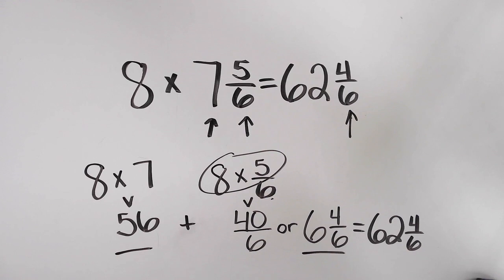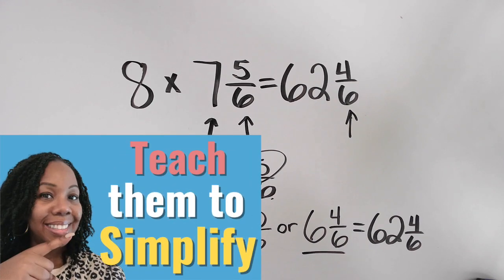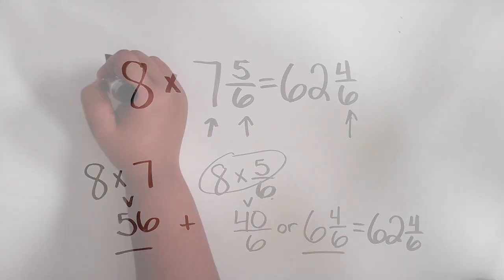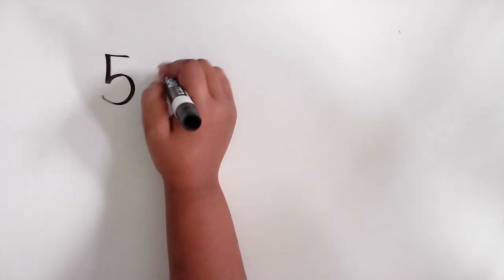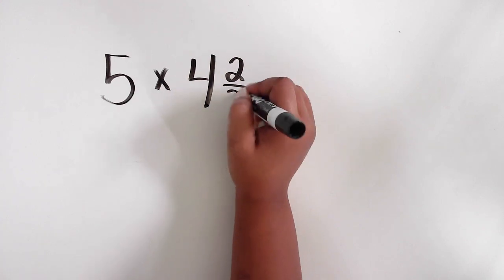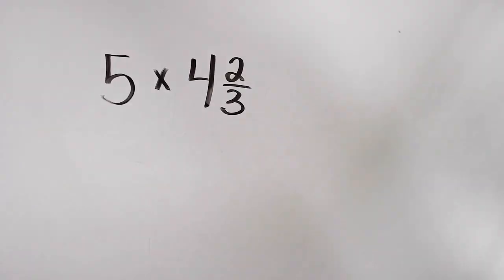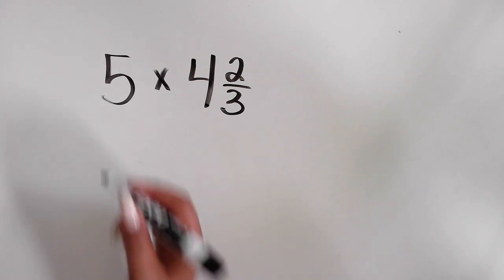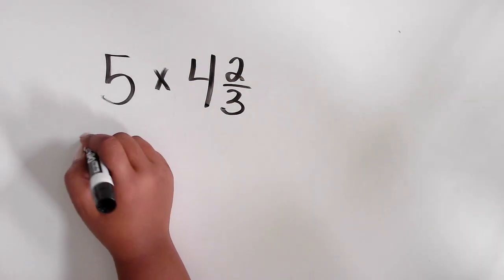4 sixths can be simplified. If you need to learn about teaching your students different ways to simplify fractions, watch this video here — I'll put the link in the description below. I want you to continue practicing the skill now before you work on it with your students. So here are three more examples of multiplying a mixed number by a whole number.